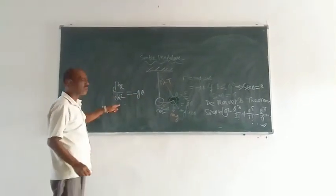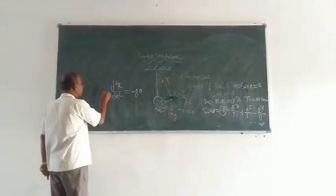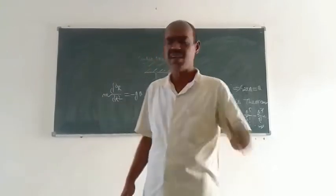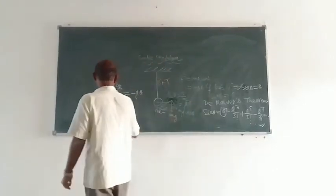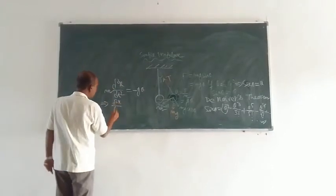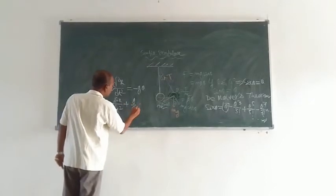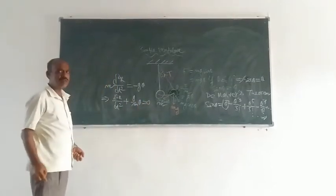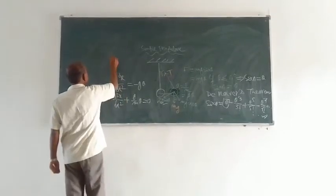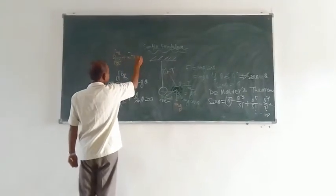So since this is acceleration, you multiply by mass to get force. After correction, the equation becomes: d²x/dt² plus g by l times theta equals zero. And you know the equation for simple harmonic motion is d²x/dt² plus omega squared times x equals zero.